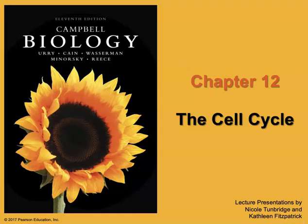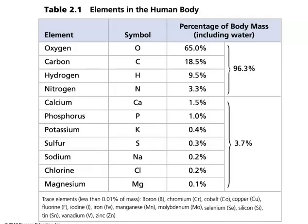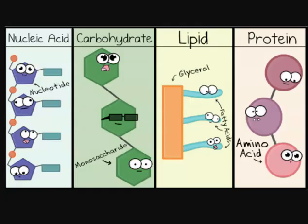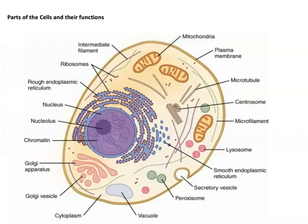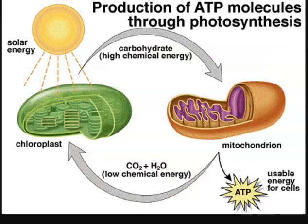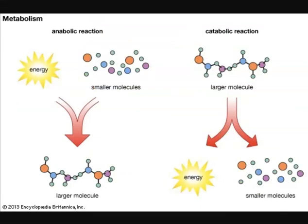Up until this point, we've learned about the elements and especially the most important elements of the cell. We used those elements to build the four macromolecules of the cell and learned about their properties. Then we moved on to the parts of the cell, specifically organelles and their functions, and dove deeper into how the cell makes energy via mitochondria-driven cellular respiration or chloroplast-driven photosynthesis. We also discussed cellular metabolism and the role of enzymes in driving all of the anabolic and catabolic reactions within our cells.